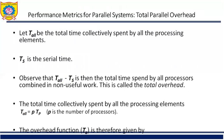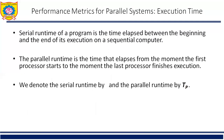So, a serial runtime of a program is the time elapsed between the beginning and the end of its execution on a serial computer. The parallel runtime is the time that elapses from the moment the parallel computation starts to the moment the last processing element finishes its execution. That is, TS is the serial time and TP is the parallel runtime.